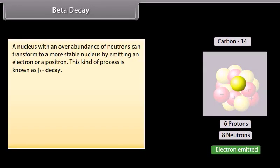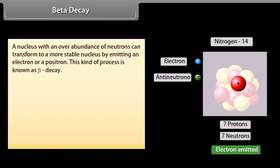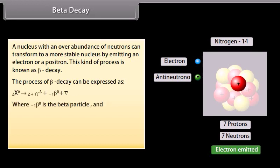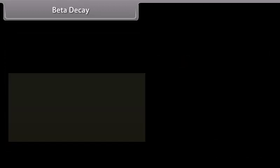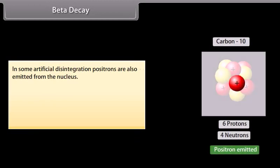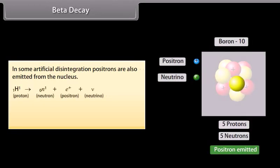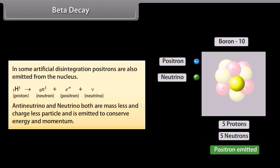Beta decay. A nucleus with an overabundance of neutrons can transform to a most stable nucleus by emitting an electron or a positron. This kind of process is known as beta decay. This process of beta decay can be expressed as... where is the beta particle and is the anti-neutrino. For example... In some artificial disintegration, positrons are also emitted from the nucleus. Anti-neutrino and neutrino both are massless and chargeless particle and is emitted to conserve energy and momentum.